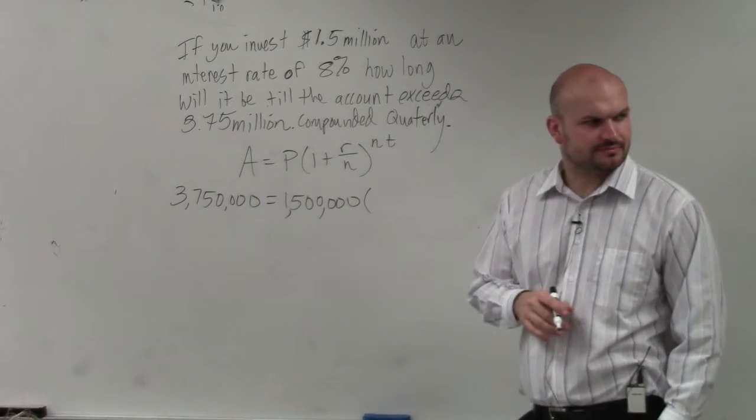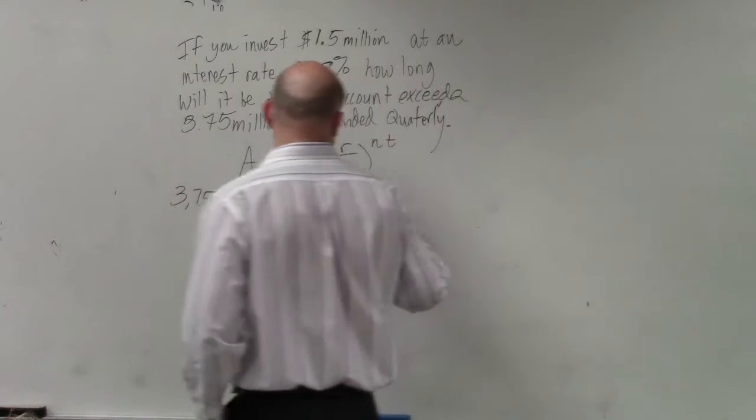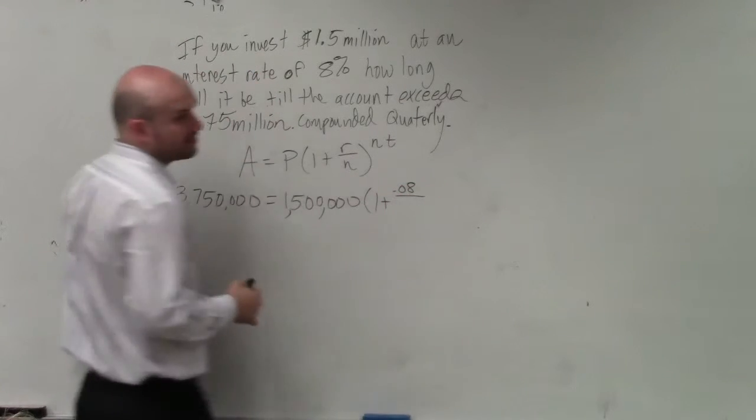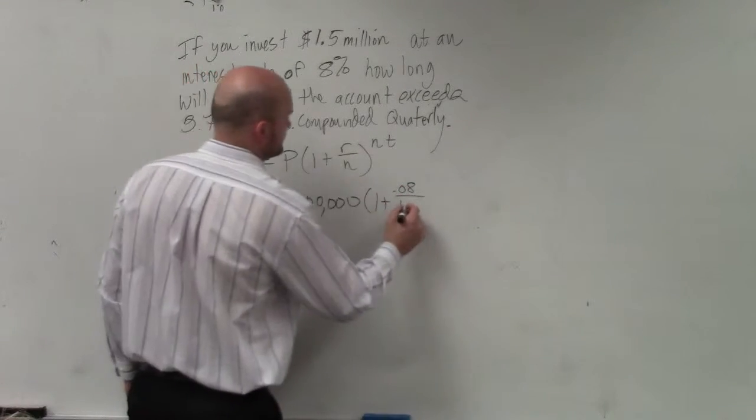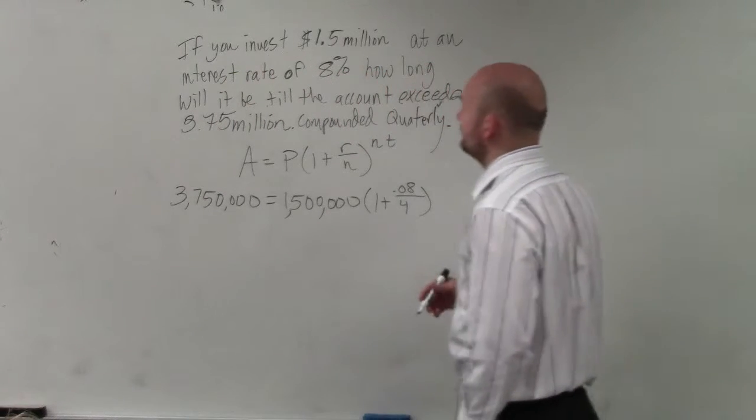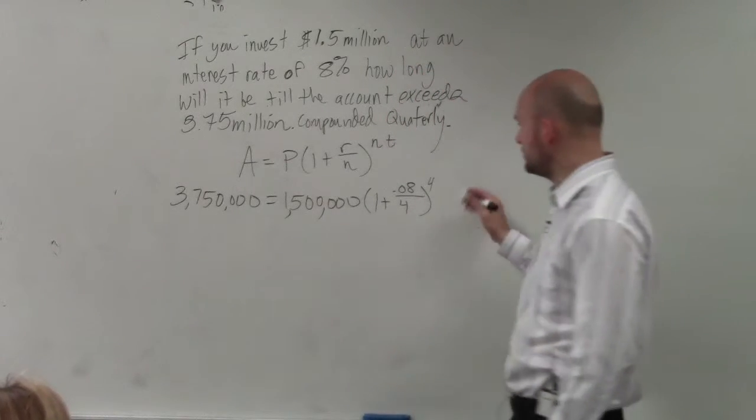So now, we need to plug in 1 plus our rate, which is 0.08. Quarterly is going to be four times a year, raised to the n, which is our number of compounds, which is 4. And then t, which is going to be our variable.